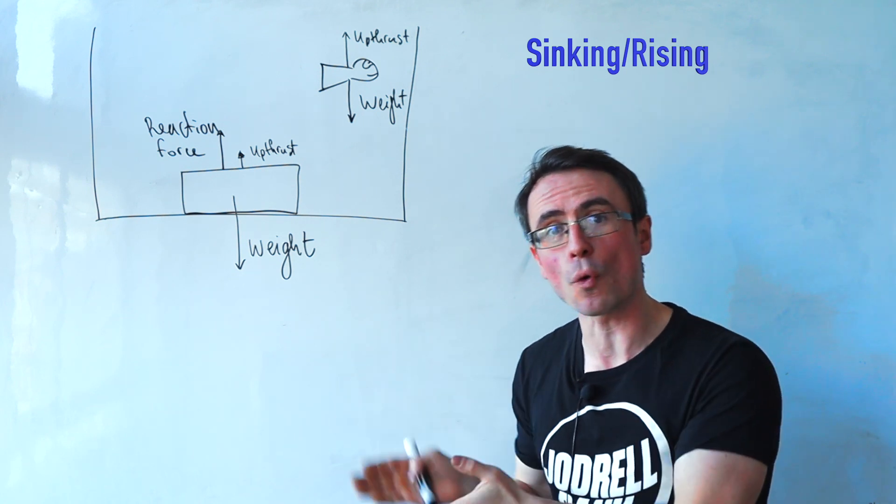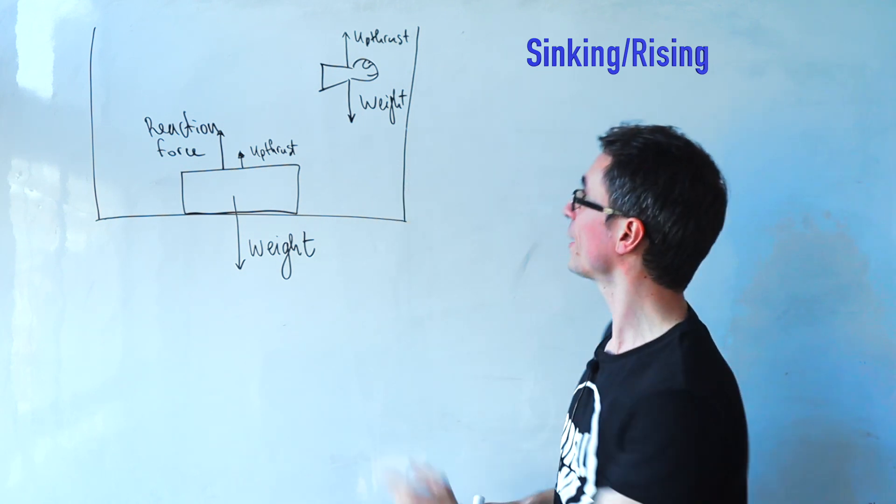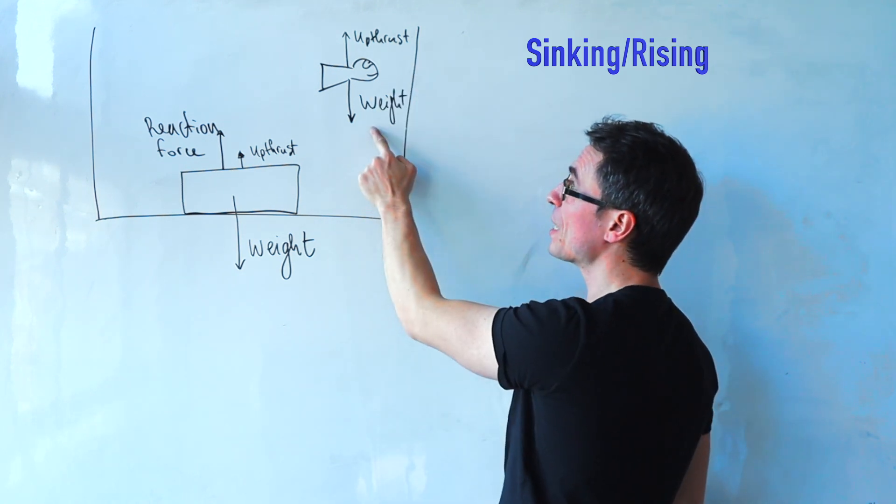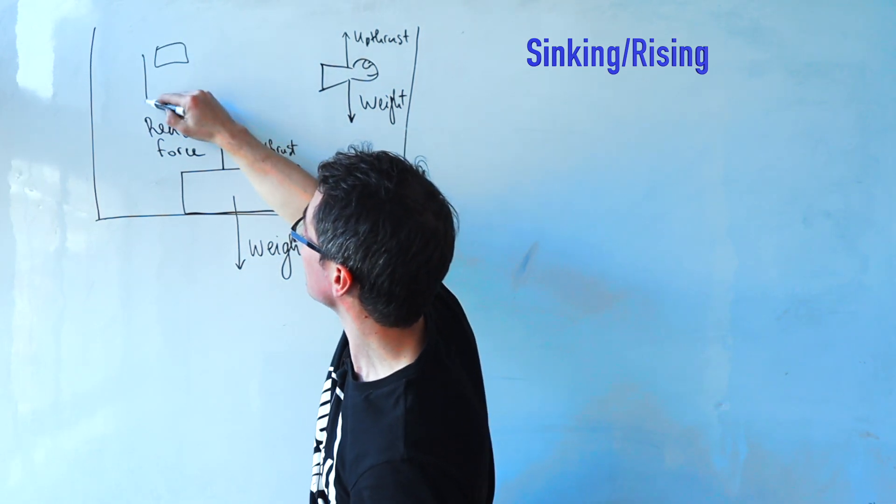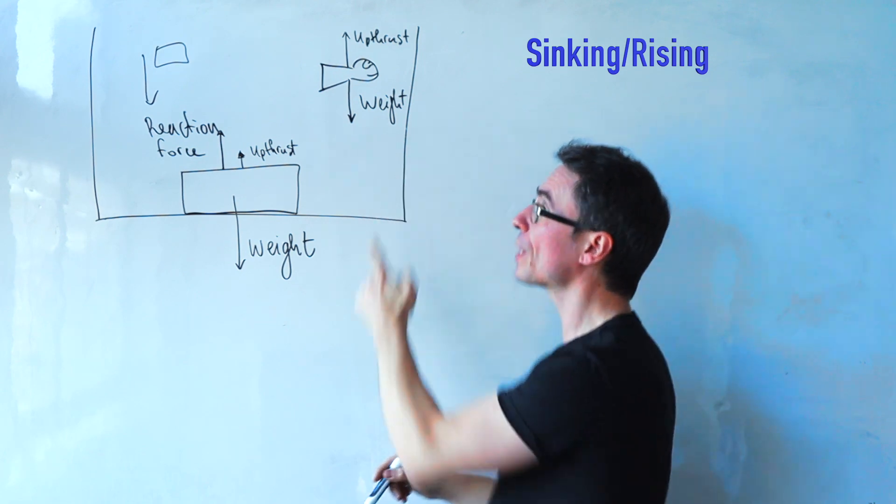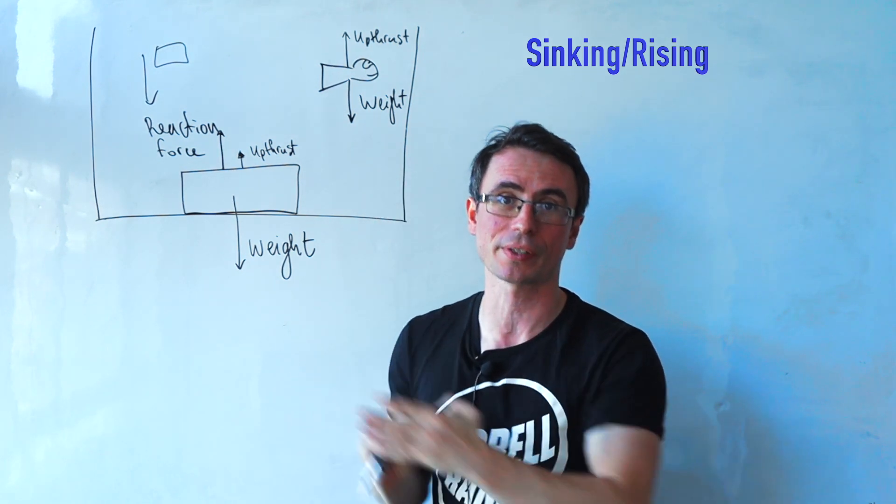If you have an object which is rising towards the surface, then the upthrust will be bigger than the weight. If you have another object which is sinking, then the weight will be bigger than the upthrust.